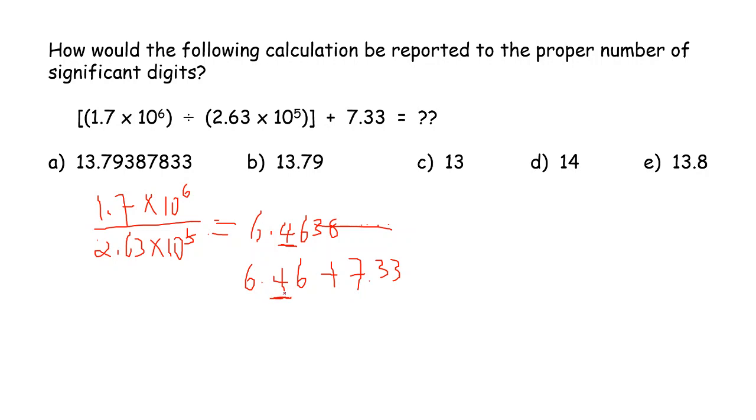So let's finish this. That should be 13.79. Again, as we just discussed, it really should be just one decimal place, not one digit. So one decimal place. And then we just do the round up, 13.8. So therefore the correct answer should be E in this question.